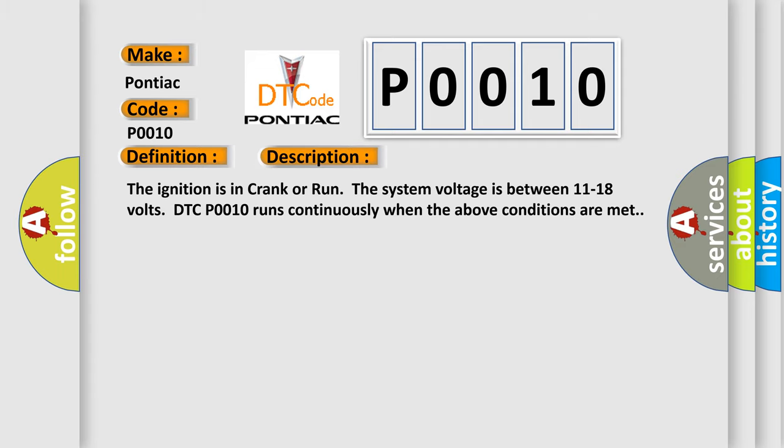The ignition is in crank or run. The system voltage is between 11 to 18 volts. DTC P0010 runs continuously when the above conditions are met.